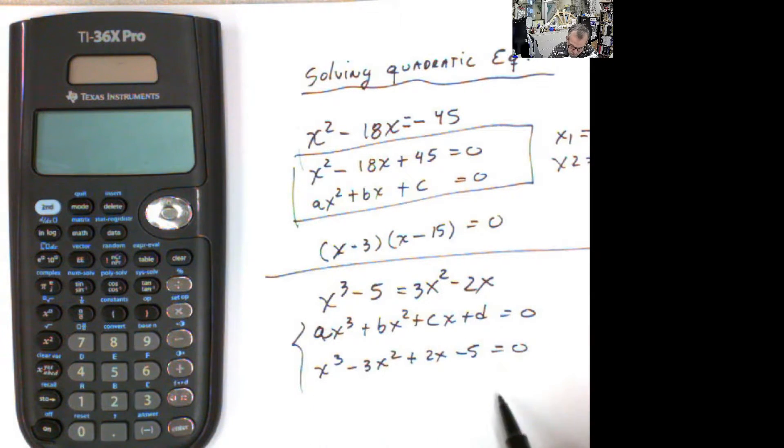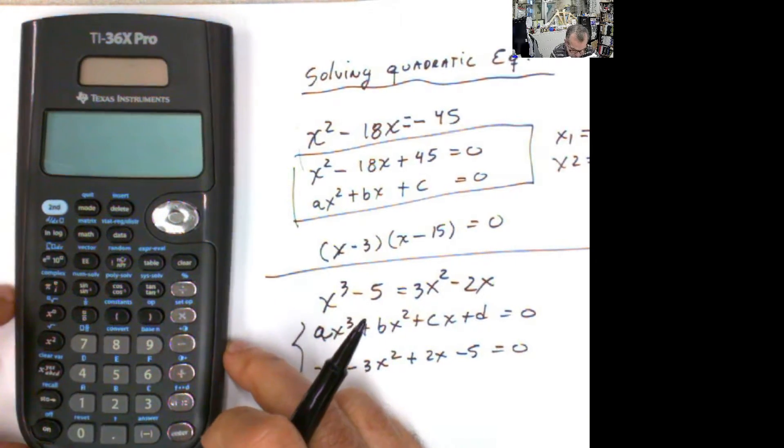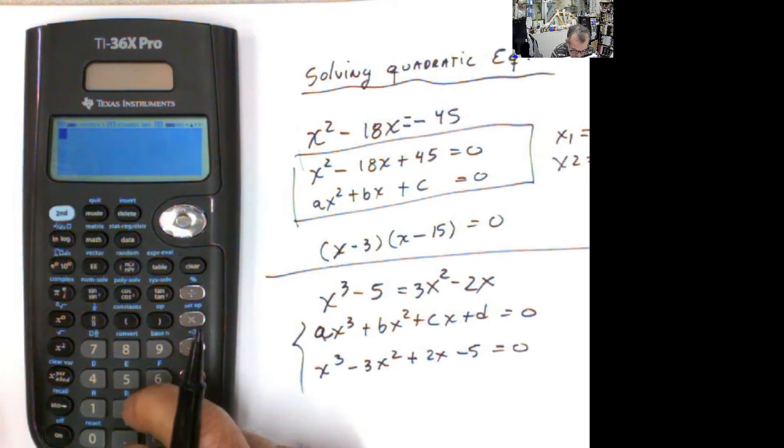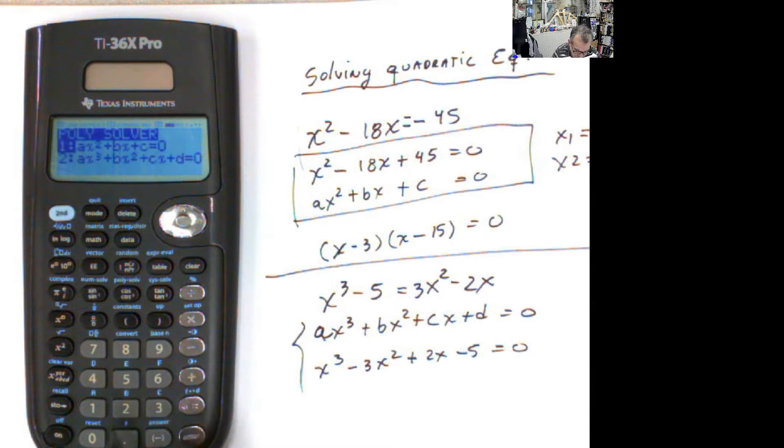Now once I have this in this order, I can use a solver for that. Polynomial solver, remember. Second solver here. And then you go to the cubic equation, which is number 2.